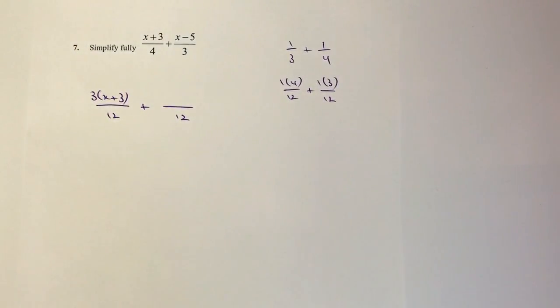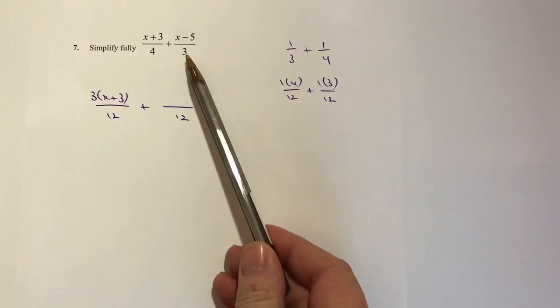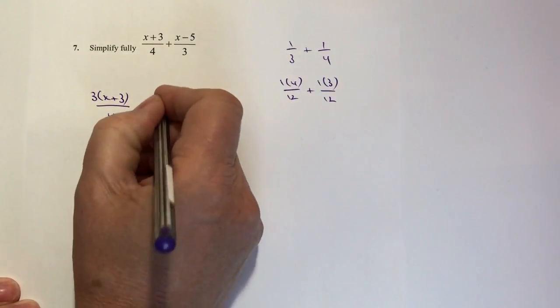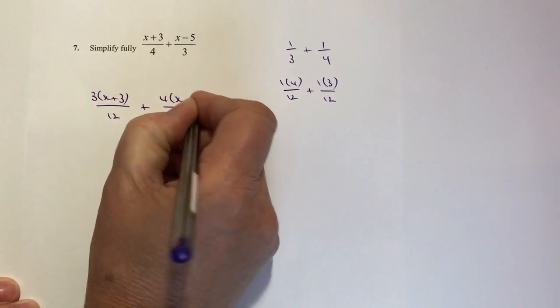It's the same with the other fraction. What have I multiplied 3 by to get to 12? Well, that's going to be 4. So I'm going to write that as 4 times (x minus 5).